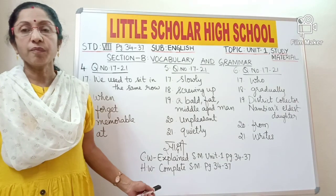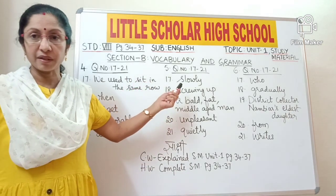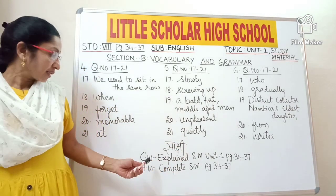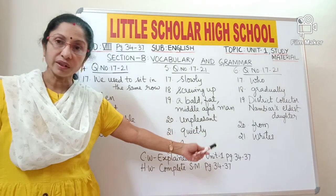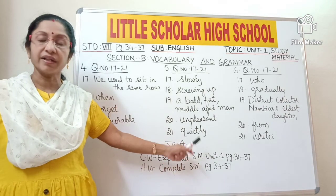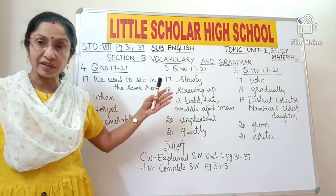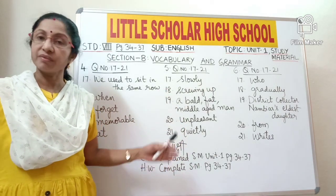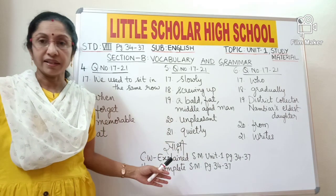Okay students, I hope all of you understood the passages we have done in Section B — Vocabulary and Grammar. Now note down today's classwork: I have explained study material Unit 1, page number 34 to 37. Homework: complete study material page number 34 to 37 and also revise the vocabulary — the new words we have learned along with their meanings, antonyms, synonyms, and the passages. I want all of you to learn and revise all these things.